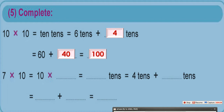When we add 60 to 40, we start with units first, then tenths. We have 0 in the units place: 0 plus 0 equals 0. And we have 6 and 4 in the tenths place: 6 plus 4 equals 10. So the result or sum is 100.